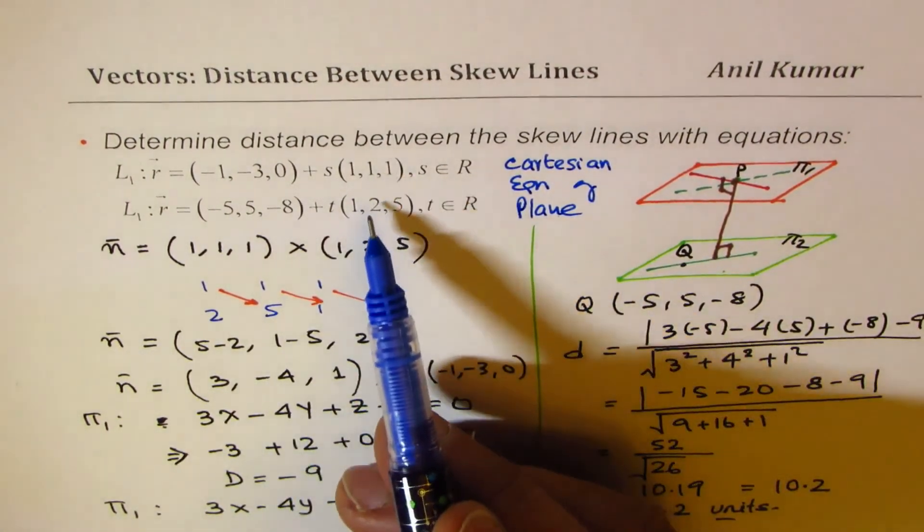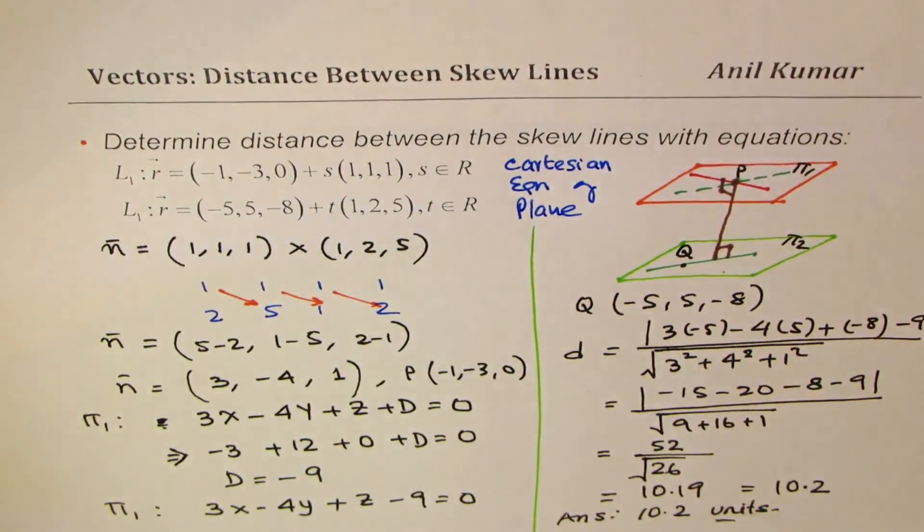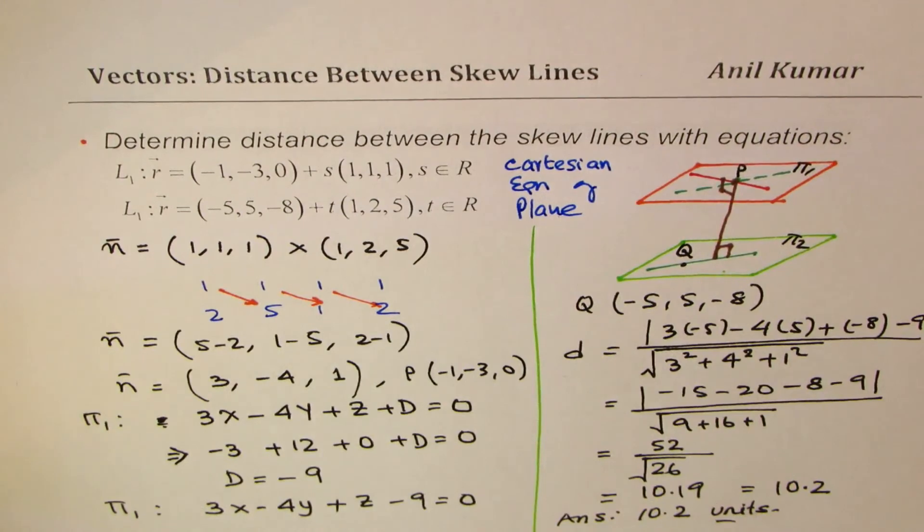Using cross product of the two direction vectors given for the lines. And then we applied the formula to find distance from a point to a plane, so I hope that helps.